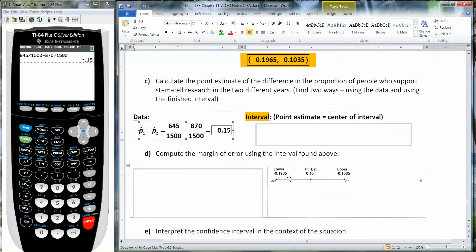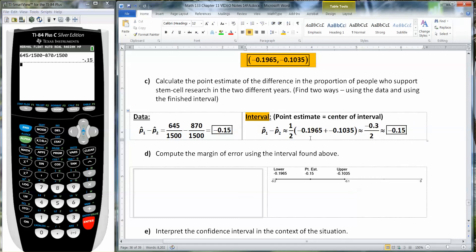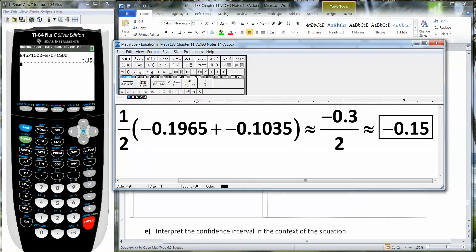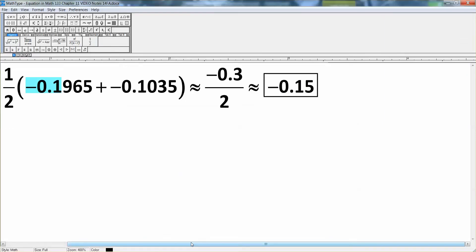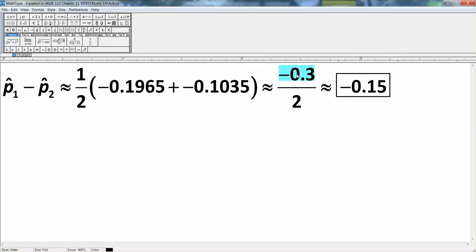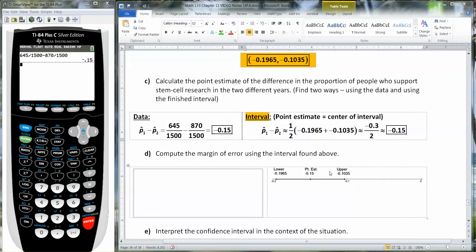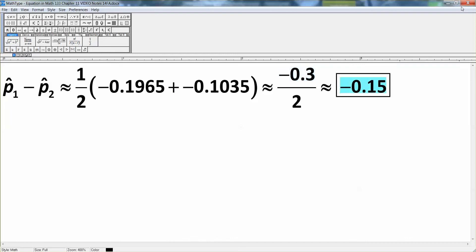Now to find it from the interval, let me remind you of what the interval looks like. So you've got your lower end over here at negative 0.1965. You've got your upper end over here at negative 0.1035. Notice the upper is farther to the right on the number line than the lower. So the point estimate is going to be in the middle of the two. So I take the negative 0.1965 and I add to it negative 0.1035. Add them up and you're going to get negative 0.3 and then you divide it by two. And that's how we end up with negative 0.15.